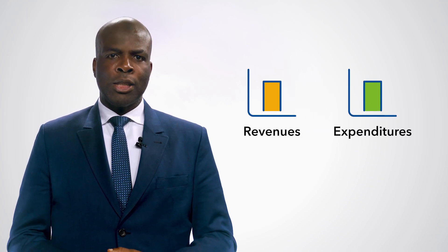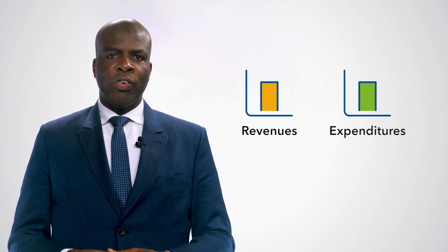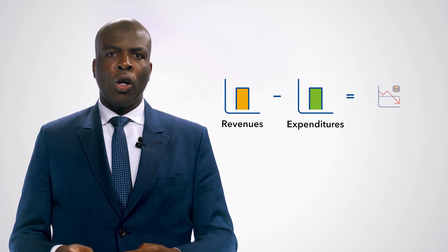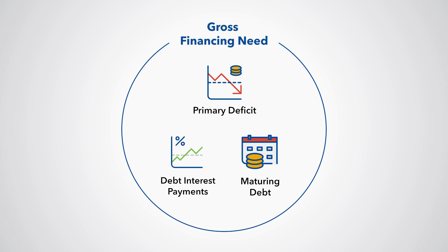To understand the stock and flow relationship a bit better, let's work with a simplified example. We are going to use a few concepts. The first is revenues — that is, income to a government, which includes taxes. Next is expenditures, the money that a government spends. The third concept is the difference between revenue and expenditure, called the primary deficit. We will add debt interest payments and any maturing debt to the primary deficit to work out the amount of debt we are going to borrow in a year, called the gross financing need.